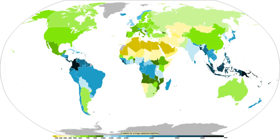The Mediterranean climate regime resembles the climate of the lands in the Mediterranean basin, parts of western North America, parts of western and southern Australia, in southwestern South Africa, and in parts of central Chile. The climate is characterized by hot, dry summers and cool, wet winters. A steppe is a dry grassland. Subarctic climates are cold with continuous permafrost and little precipitation.